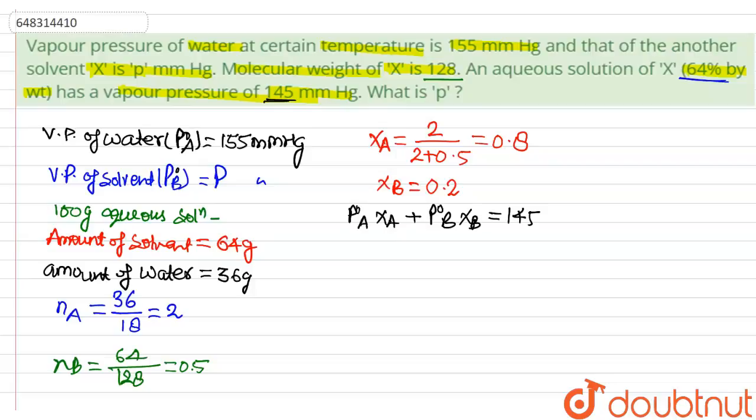Put the value of P°A, which is 155. So, 155 times XA, which is 0.8, plus P°B, which is P, times XB, which is 0.2, equals 145.